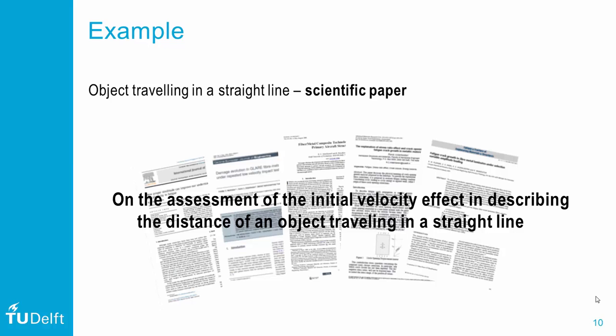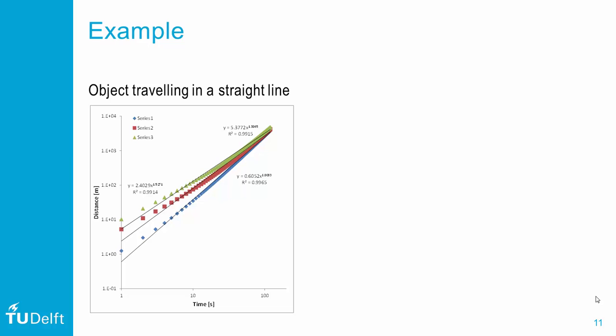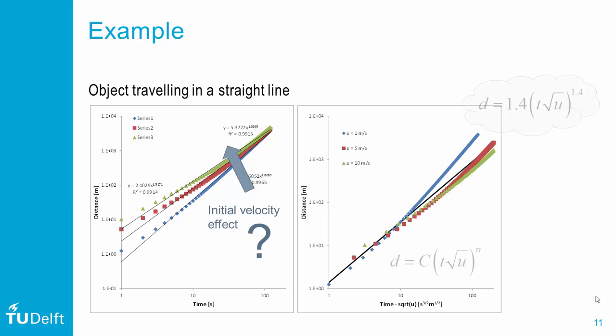However, based on that paper someone else performs similar tests, but measures displacement for a longer duration of time. Looking at their data, it seems the initial velocity effect that we identified is vanishing when time increases. Hence predictions with our equations don't work well in the large time range. There appears to be a limitation to the range of our equation. How do we deal with that?